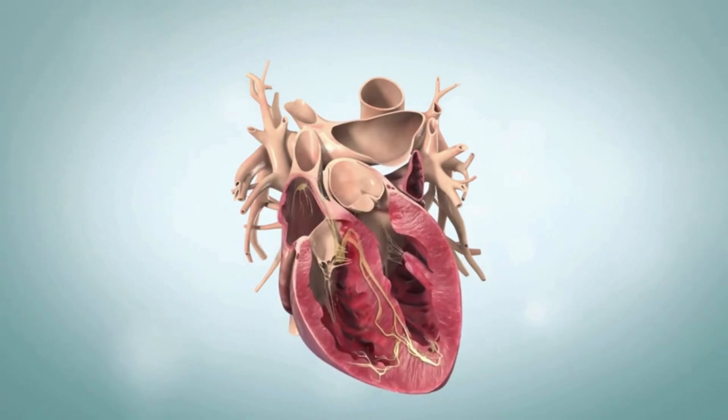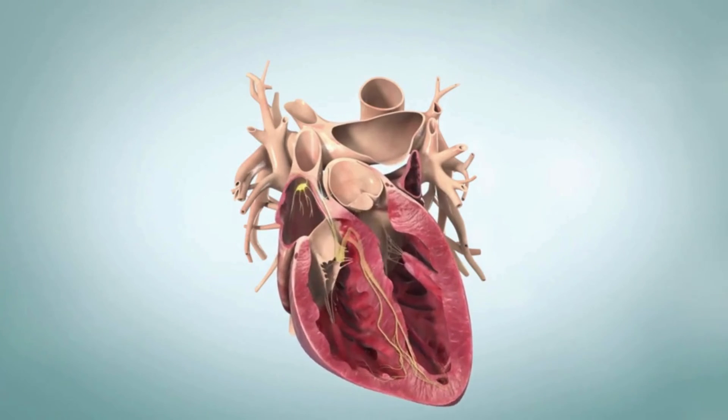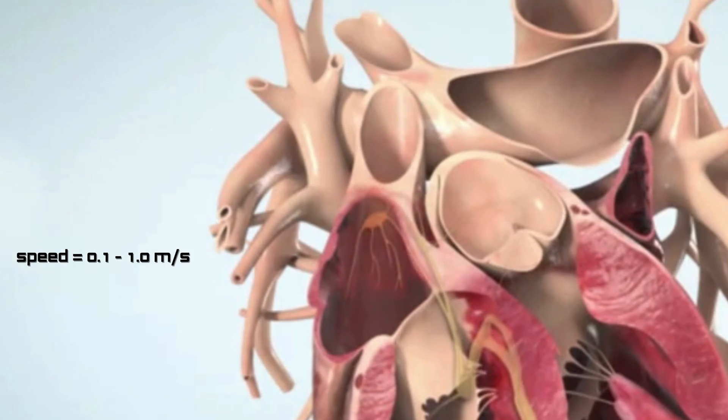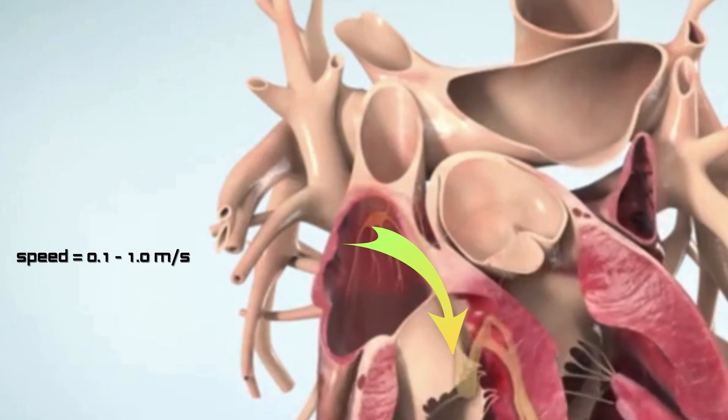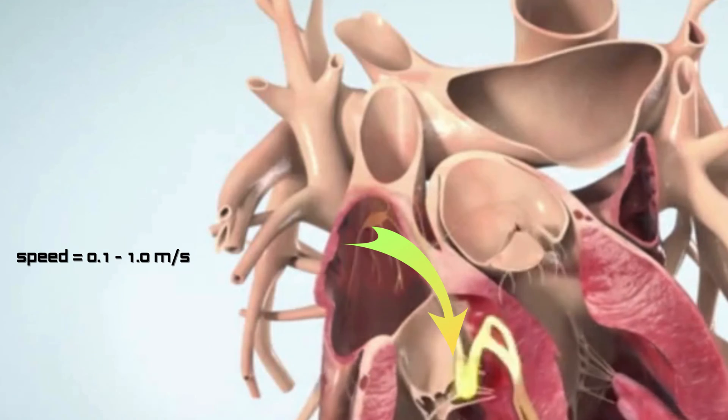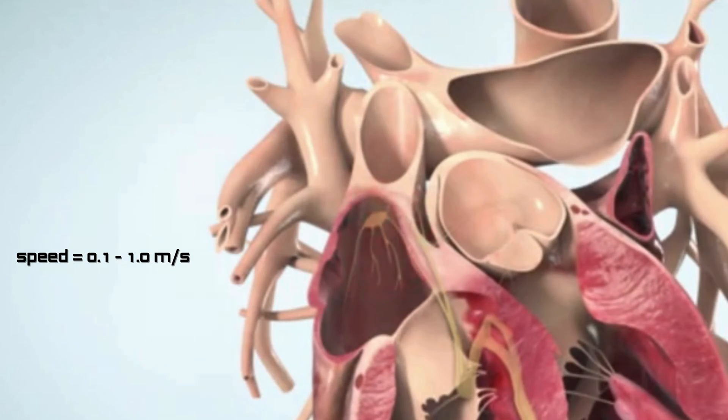Next, the impulse travels to the atrioventricular node, where it encounters a slightly faster pathway, moving at speeds between 0.1 to 1.0 meters per second. The impulse journeys through specialized pathways within the atria before reaching the AV node.